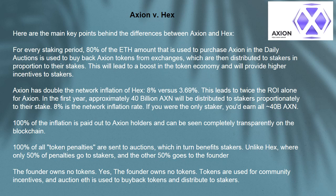Here are the main key differences between Axion and HEX. For every staking period, 80% of the ETH used to purchase Axion in the daily auctions is used to buy back Axion tokens from exchanges, which are then distributed to stakers in proportion to their stakes. This leads to a boost in the token economy and higher incentives to stakers. Axion has doubled the network inflation of HEX — 8% versus 3.69%.